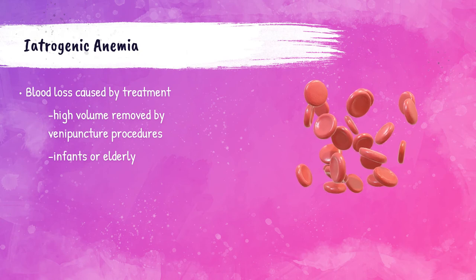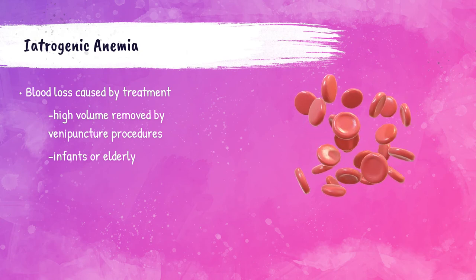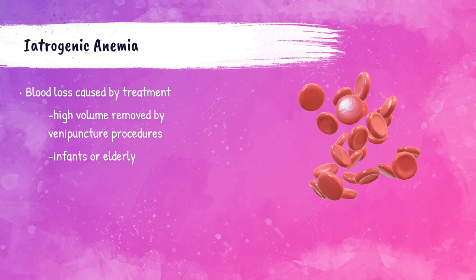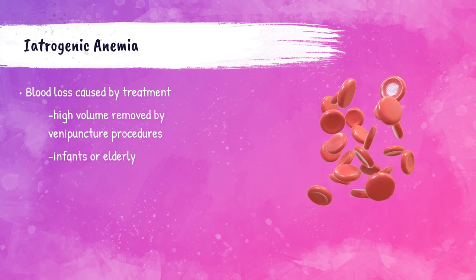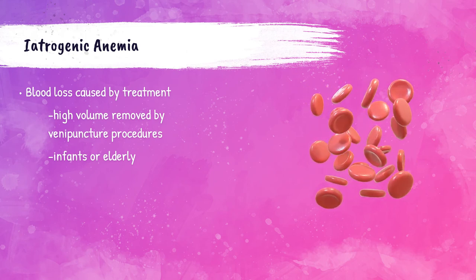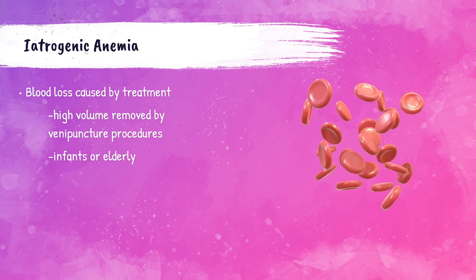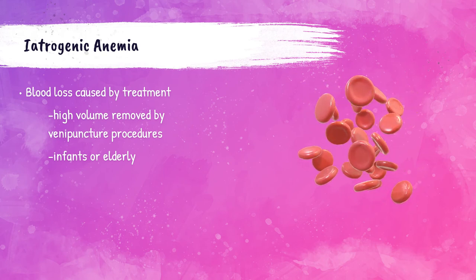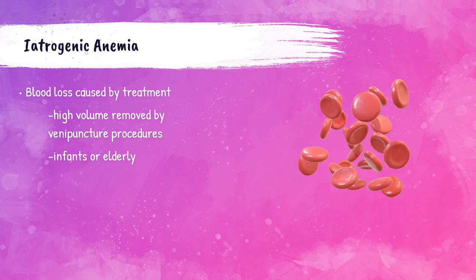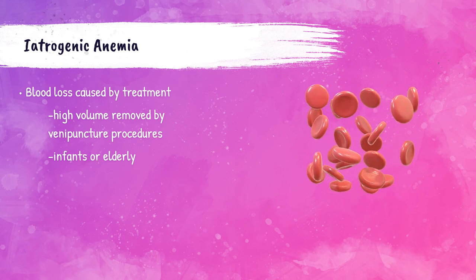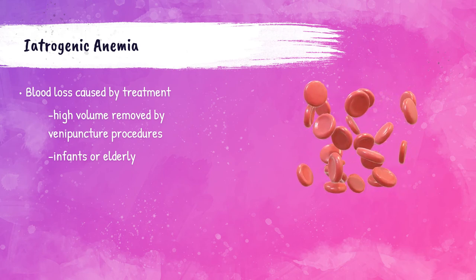If blood is collected too frequently or more than needed, this can cause anemia in some patients — this is called iatrogenic anemia or nosocomial anemia. When a premature infant has a lot of blood collected, they will need blood transfusions to replace what was collected for testing. Infants and critically ill patients need to be monitored for this type of anemia when a lot of blood is being collected from them.